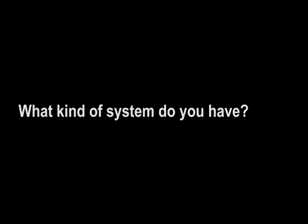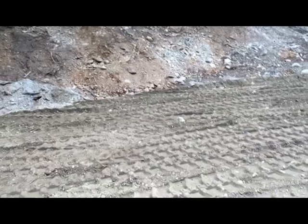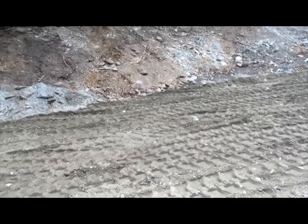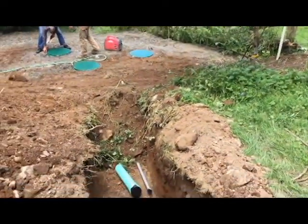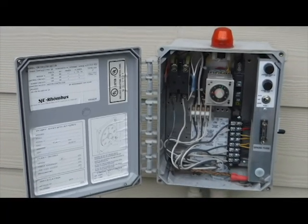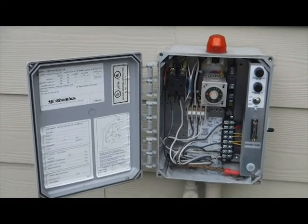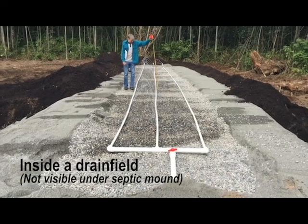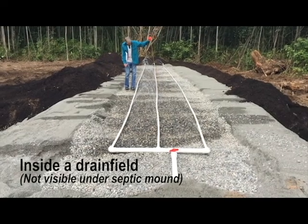There are lots of different kinds of drain fields, but two main kinds. The first is a gravity system, which just uses gravity to push the water from your septic tank into your drain field where the water is then filtered. A pressure system requires a pump, which takes the water from your tank and pushes it into the drain field.